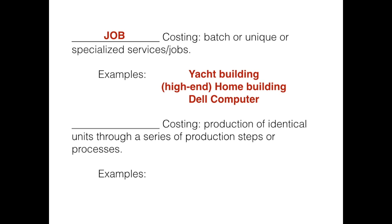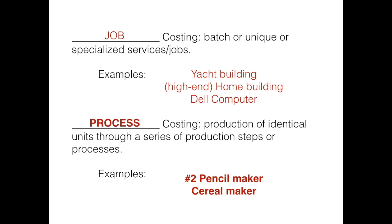A computer company that produces thousands and thousands of the same computer with the same RAM and same hard drive — that is an example of process costing. Process costing is when you're producing identical units through a series of productions, processes, or steps. Like a number two pencil maker — they're making millions of number two pencils over and over again; they're all identical and go through the exact same process.